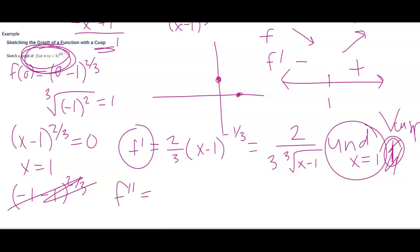So f double prime is bring that down negative two ninths x minus one to the negative four thirds. So that's negative two over nine cube root of this to the fourth. Now, this being to the fourth means that inside is always going to be positive. It doesn't matter if you cube root first and then fourth. This bottom is always positive. This top is always negative. So our second derivative is always negative. So this needs to be a function that is always concave down.